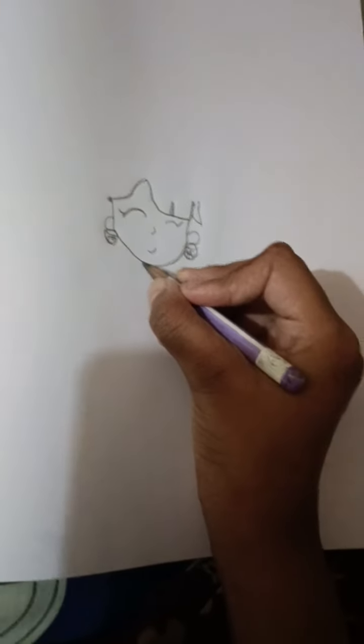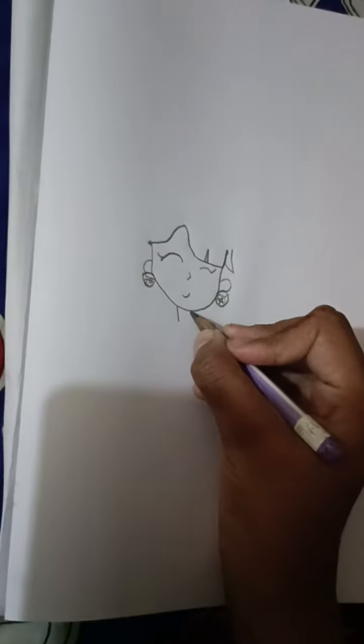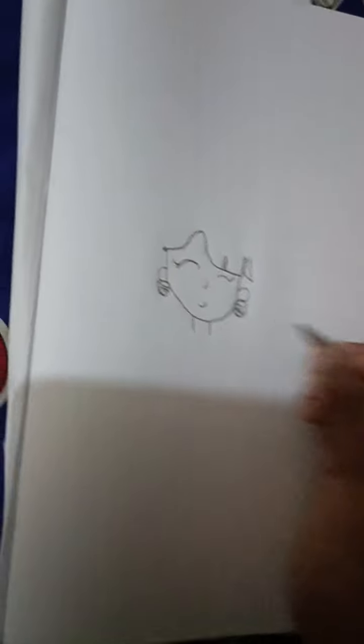Let's do the other ear. Same - draw this big. Next step, draw the neck. The hair will do last.